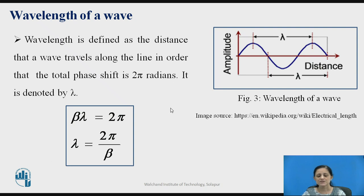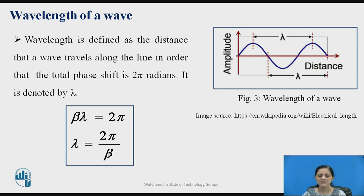The equation for lambda is given by: beta times lambda equals 2 pi, where phase shift is denoted with beta. Beta times the wavelength covers the total distance equal to 2 pi. Therefore, lambda equals 2 pi divided by beta, where beta is the phase shift constant and lambda is the wavelength.